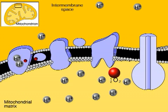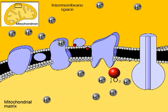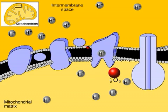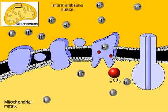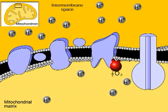The energy given up by the flow of electrons is used to pump hydrogen ions from the mitochondrial matrix into the intermembrane space. Oxygen captures the electrons in the very last step in electron transport. The last complex adds a pair of electrons to an oxygen atom and two hydrogen ions, forming water.